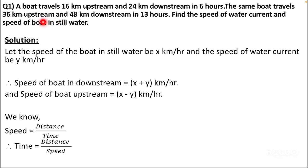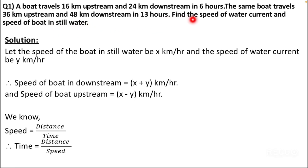By reading this question, we understand that when the boat travels 16 kilometers upstream and 24 kilometers downstream it takes 6 hours, and when the same boat travels 36 kilometers upstream and 48 kilometers downstream it takes 13 hours. We are supposed to find the speed of the water current and the speed of the boat in still water. So we will take the speed of the boat in still water as x kilometers per hour and the speed of the water current as y kilometers per hour.